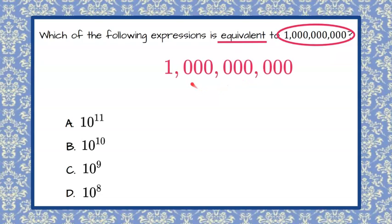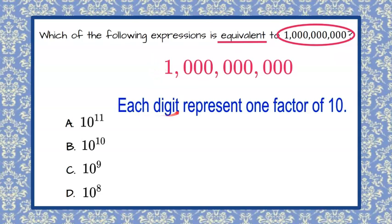Let's rewrite our numbers here. We have nine zeros, and first we need to understand that each digit of this number represents one factor of 10. When we say factor, that means multiply.